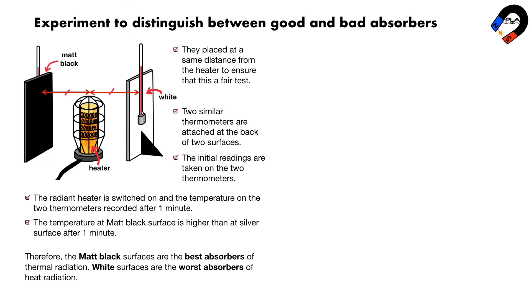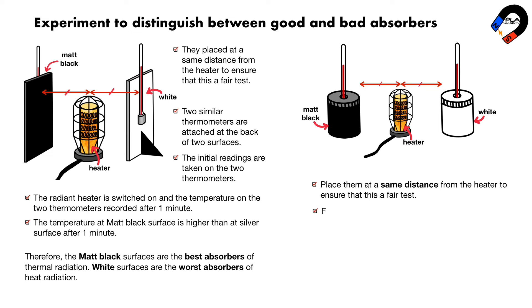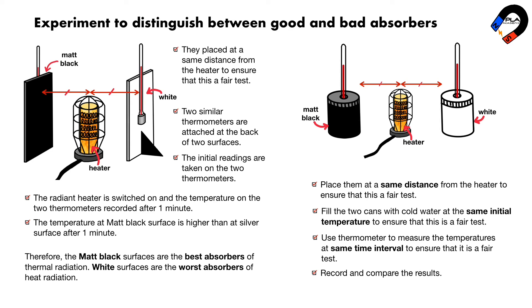Another experiment to investigate the emitters of thermal radiation: set up the experiment as shown. One can has a matte black surface and the other has a white surface. Place them at the same distance from the heater to ensure a fair test. Fill the two cans with cold water at the same initial temperature to ensure a fair test. Use a thermometer to measure the temperatures at the same time intervals, then record and compare the results.